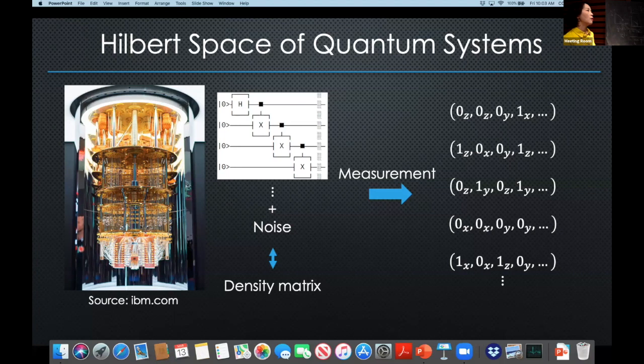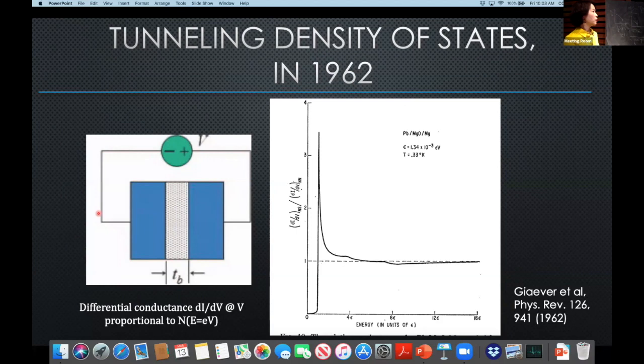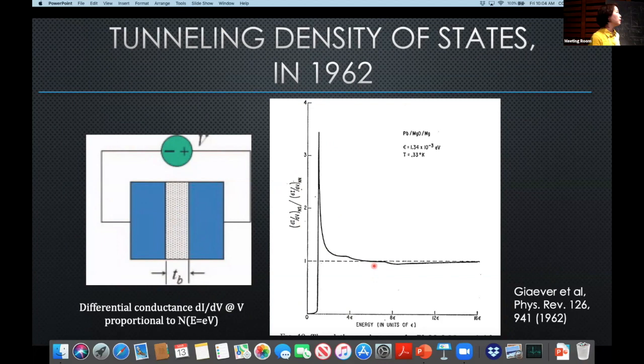Tunneling density of states in 1962 was measured through a macroscopic tunnel junction, and the only data we got out of each measurement was just a curve. We understand every aspect of this curve — not just why there is a gap, why there is a peak, but all the wiggles. Being able to model this data in detail gave us great confidence that we understood what was going on.